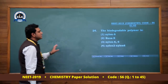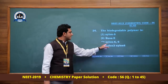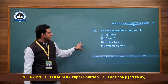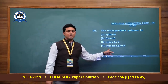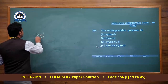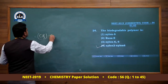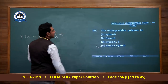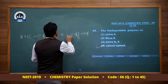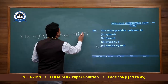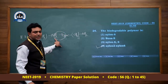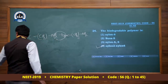Biodegradable polymer question from polymer chapter. Nylon 2-nylon 6 and PHBV are biodegradable polymers. Nylon 2-nylon 6 monomers are glycine (NH2-CH2-COOH) and amino caproic acid (6-carbon, COOH and NH2 ends). These form amide linkages, making it biodegradable. Answer is option 4.